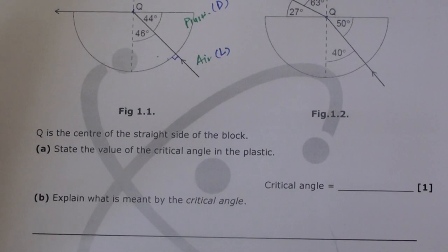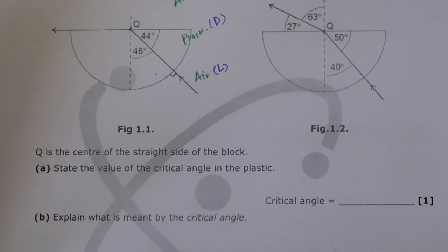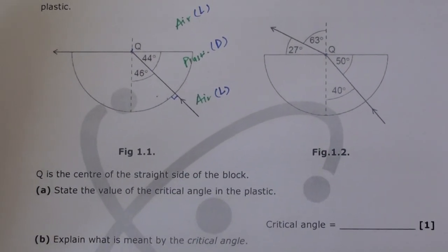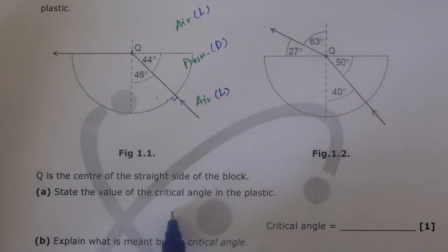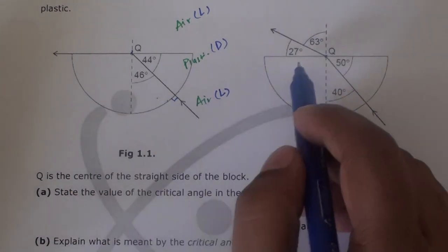Now let's go to the question. The first part says state the value of the critical angle in the plastic. We know that critical angle is that angle at which refraction is 90 degrees, or the light bends along the surface. If we look at these two diagrams, something is happening here.